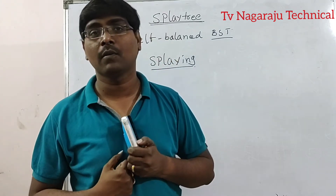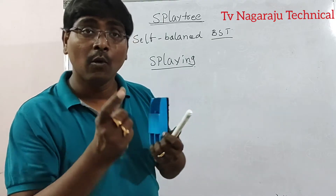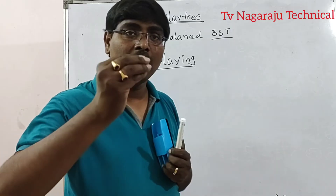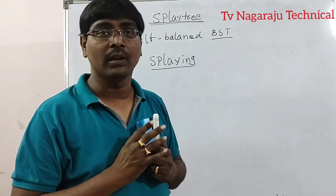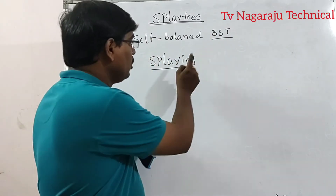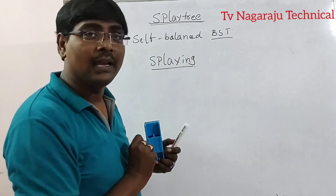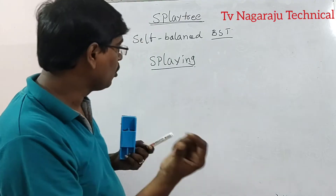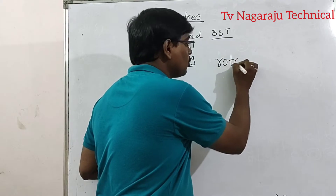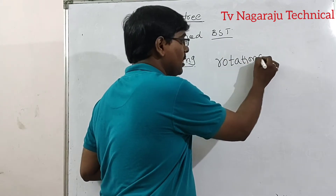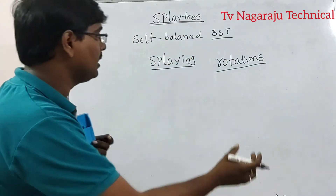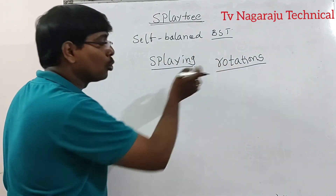Why? The frequently accessed elements are near to the root. If they are near to the root, it is easy to perform operations — quickly we can perform the operation. The technique used is called Splaying. If you are performing any operation in your tree, immediately after completion of the operation, you need to perform the Splaying operation. The accessed element is moved to the root of the tree using rotations.